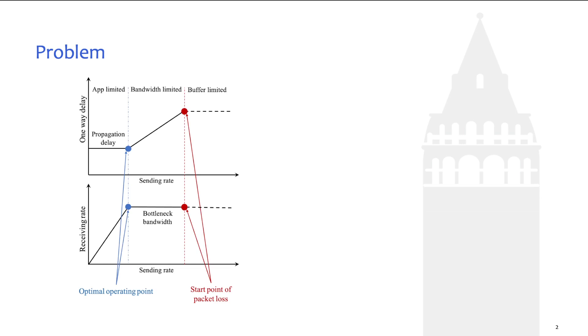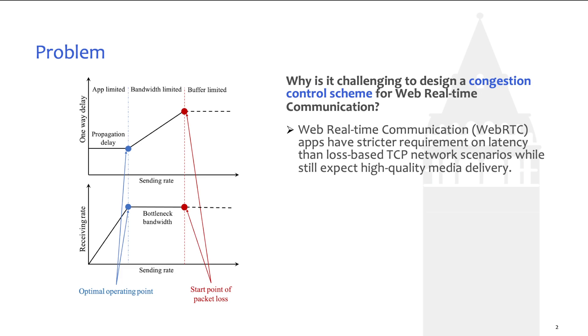Before talking about the model, let's review the challenge of designing a congestion control scheme for Web Real-Time Communication. As shown in this figure, the objective of congestion control is to keep network links operating at the optimal point where in-flight data volume equals to BDP. For real-time communication, WebRTC tends to keep the receiving buffer at a lower level to reduce the latency. It treats the excessively delayed packets as losses, which may bring severe damage to media quality. On the other hand, probing mechanisms designed for loss-based TCP cause random queuing delays that cannot be tolerated in real-time applications. Therefore, congestion control is challenging in WebRTC, especially in terms of the trade-off between the delay and the media quality.